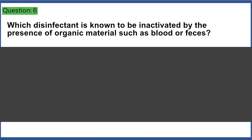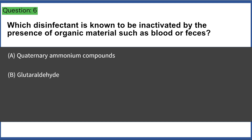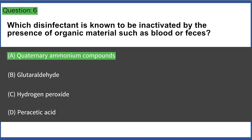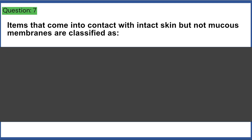Which disinfectant is known to be inactivated by the presence of organic materials such as blood or feces? a) quaternary ammonium compounds, b) glutaraldehyde, c) hydrogen peroxide, d) peracetic acid. Answer: A, quaternary ammonium compounds.